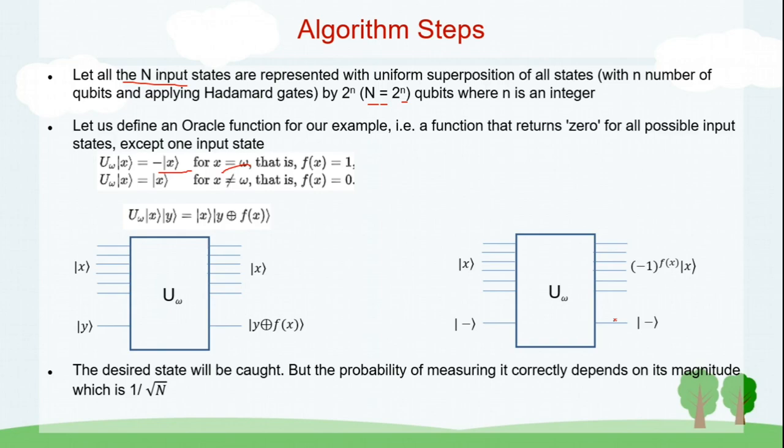At that time, what happens is this negative state comes out undisturbed, while the state x will get some phase information. So, how that is getting added is minus 1 to the power of f of x. Whenever the state which you are interested, you will see some phase information getting added, minus 1 to the power of 1. Otherwise, f of x is 0, which means nothing happens. The state of x remains as it is.